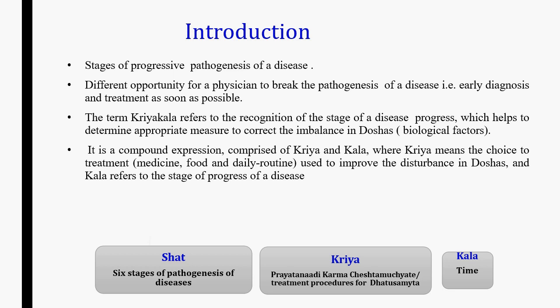When dosha get vitiated, disease does not manifest spontaneously. But it is a process of sequential development which causes disease. Sushrut has considered this as Shat Kriya Kaal. In the six stages of Kriya Kaal, as soon as treatment is started, the disease will be easily treated.